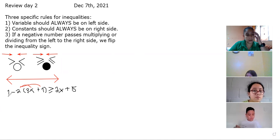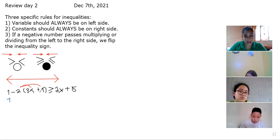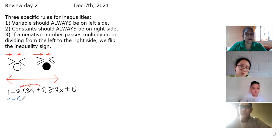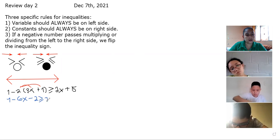So we keep the 1, and now we multiply taking the sign into account. Negative 2 times 3x gives us negative 6x. Negative 2 times 1 gives us negative 2. Since we're doing nothing to the other side or the inequality sign, we just go ahead and copy it as it is.